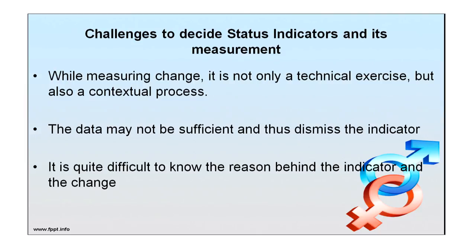Challenges exist in deciding status indicators and their measurement. While measuring change through indicators, it is not only a technical exercise but also a contextual process. You have to know the context in which the indicator has been measured. It may differ society-wise, geography-wise, and nation-wise. The data may not be sufficient and may thus dismiss the indicator. It is quite difficult to know the reason behind the indicator and the change, because an indicator shows the status — it does not explain why or how.